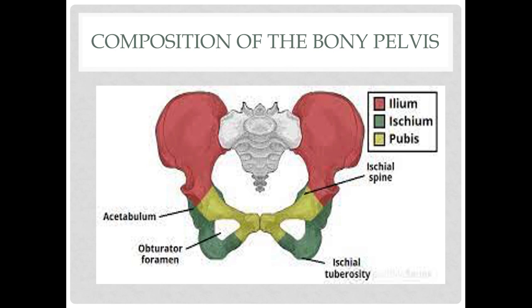We have three main parts of the bony pelvis: the ilium, the ischium, and the pubis. In the middle is the symphysis pubis, where the two pubic bones connect or meet. We also have the sacrum, the coccyx, and the ischial spines, which are partially covered in this drawing.